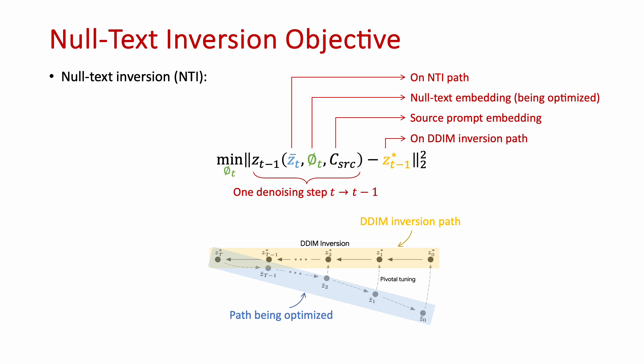Here is the optimization objective of null-text inversion. We optimize the null-text embedding shown in green, such that the reconstruction path shown in blue with bar tracks the inversion path shown in yellow with star.